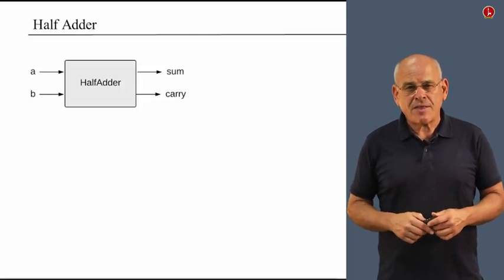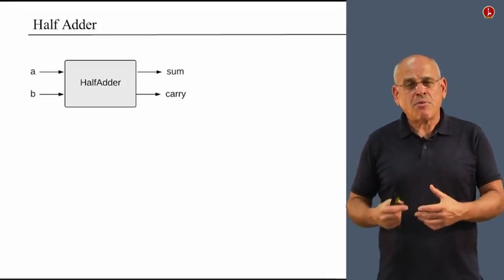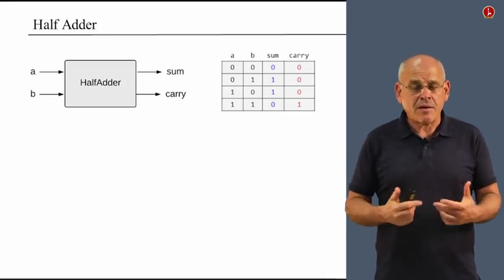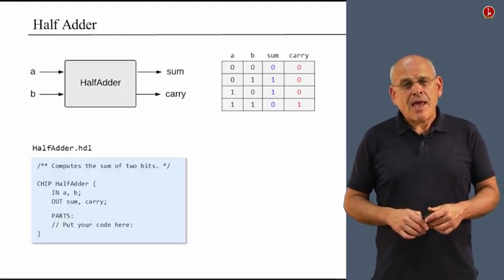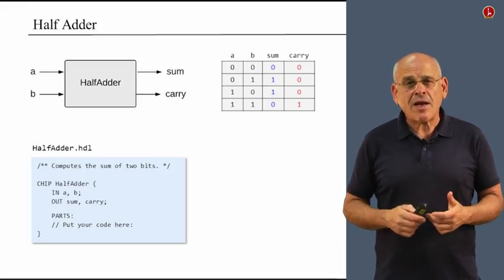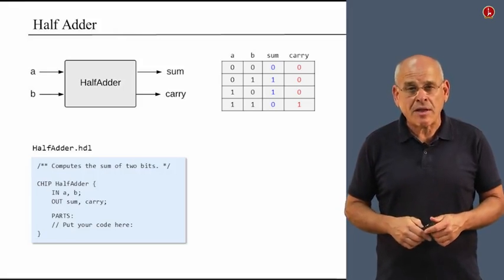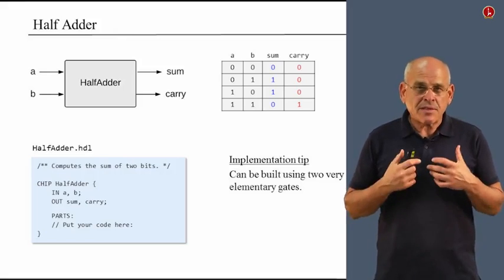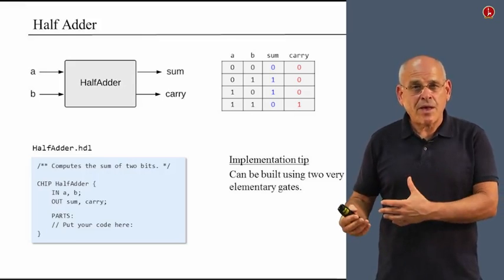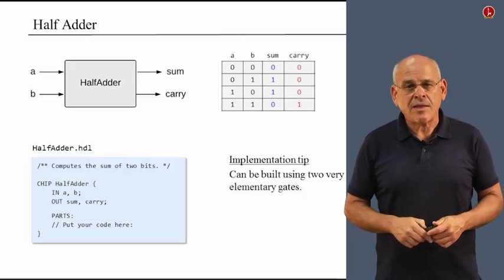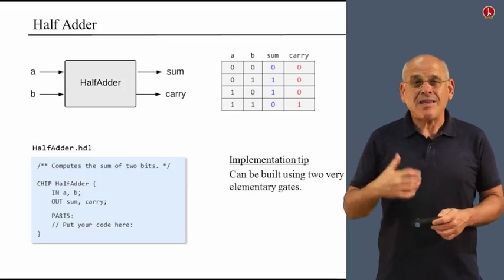Let us start with the simplest chip in this family: the half-adder. The half-adder takes two bits, adds them up, and outputs both the sum of these two bits and the carry bit, which may be either zero or one. This is the truth table of the half-adder, and here is the stub file of this chip. If you look carefully at this truth table, you will realize that the sum and the carry columns are identical to the outputs of two gates that we have already built in project one. Building this gate is a rather trivial thing — you pick up two gates you already built, plug them in, and you get half-adder functionality.